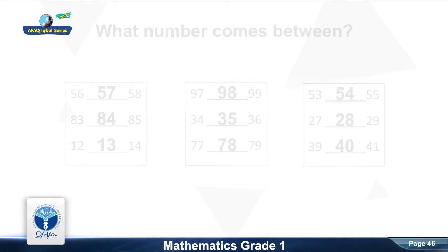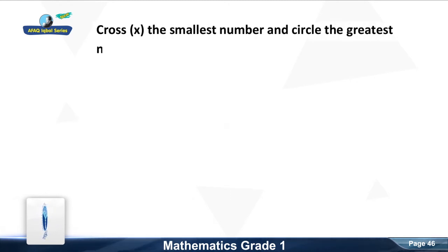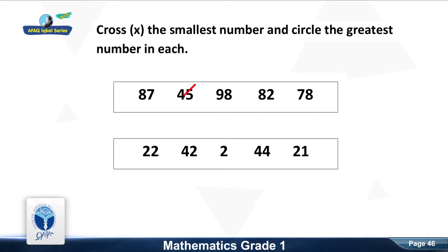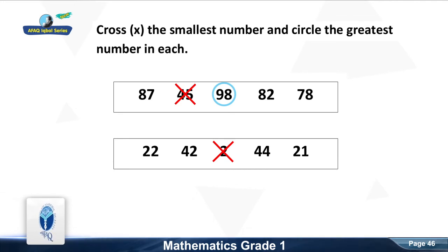Now we move to the next resource pack concept. Cross the smallest number and circle the greatest number in each group. First group: cross the smallest number. Good, it is forty-five. Now circle the greatest number. Good, it is ninety-eight. Next group: cross the smallest number. Good, it is two. Now circle the greatest number. Good, it is forty-four.